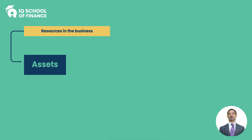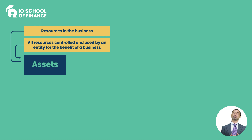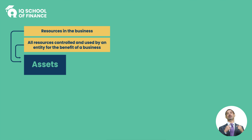पहला head of account that is assets - जो के हमने accounting equation में last video में देखा था कि resources in the business is called assets. जितने भी resources business में लगे हैं that is called assets. इसकी एक और definition: all the resources which are controlled by an entity and give benefit to the entity or the business is called assets.